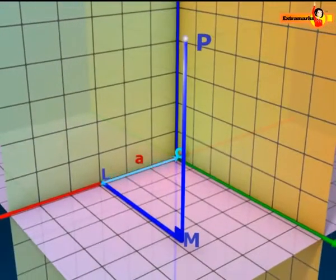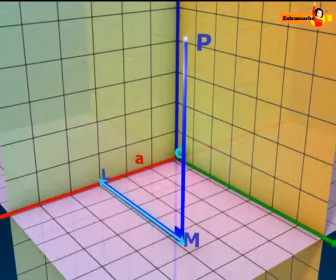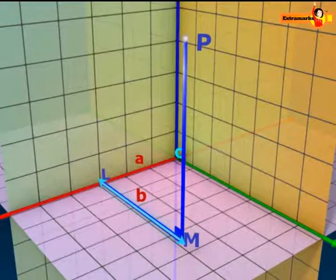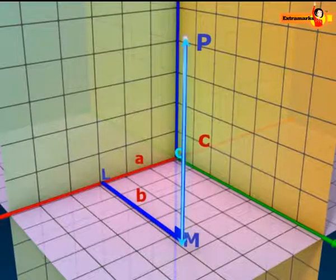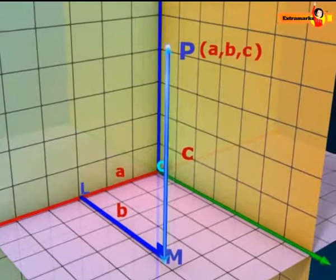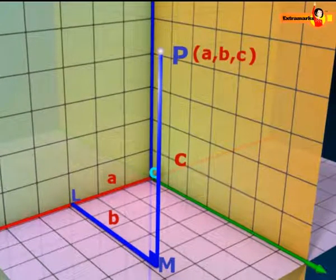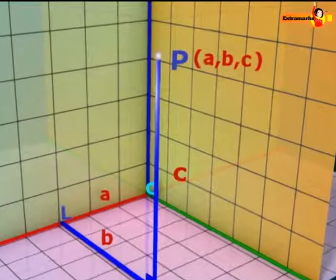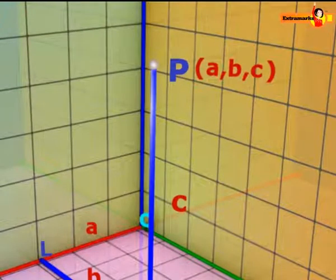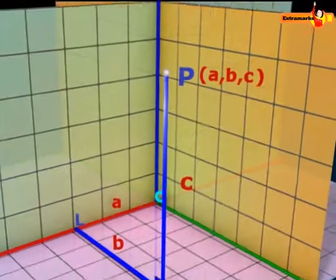Let OL be a, LM be b, and MP be c. Then a, b, and c are called the x, y, and z coordinates respectively of the point P in the space. In the figure we may note that the point P lies